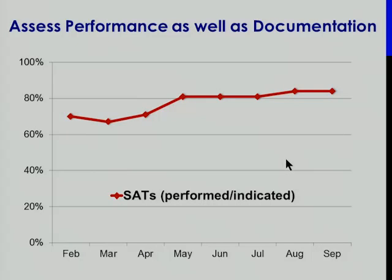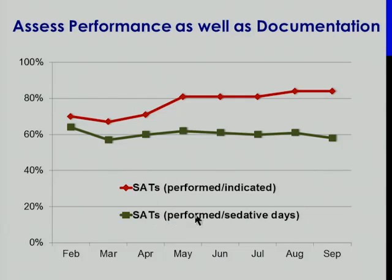Another lesson: assess performance as well as documentation. One of our ICUs showed SAT performance rates starting at a reasonable level and improving to around 90%. However, there's always the worry that an apparent improvement can result from improved documentation rather than actual practice change — if you document contraindications better, the number of eligible opportunities shrinks, artificially inflating performance rates. When we looked at SATs performed divided by the number of sedative days, we saw a flat line. This ICU got better at documentation — a victory — but changing actual patient care was the next step to work on.